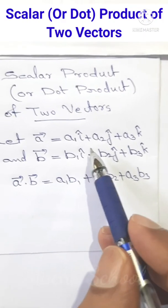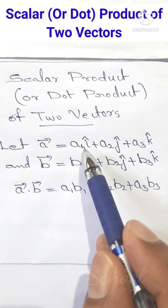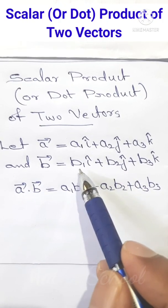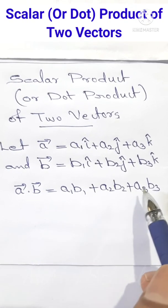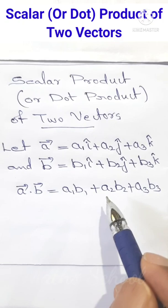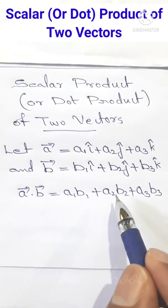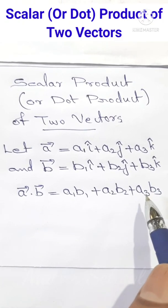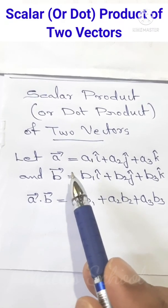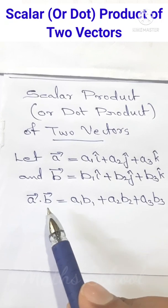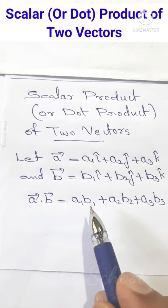That is, to find the scalar product of two vectors, we have to multiply the corresponding scalar components and find the sum of these products. Once again, a dot b equals a1b1 plus a2b2 plus a3b3. Remember, the scalar product or dot product of two vectors is a scalar quantity, not a vector quantity.